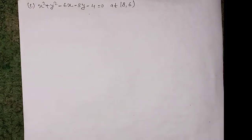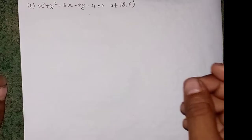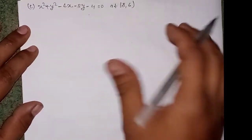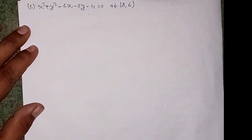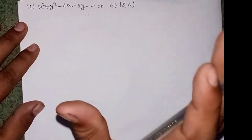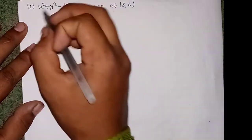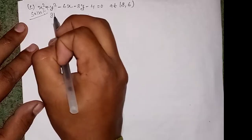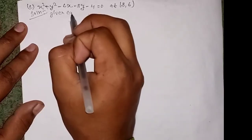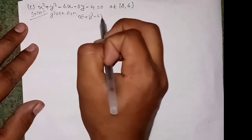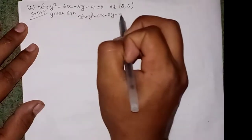The question for part c is: x² + y² - 6x - 8y - 4 = 0, at point (8, 6). We need to find the tangent and normal. Solution: given equation is x² + y² - 6x - 8y - 4 = 0.